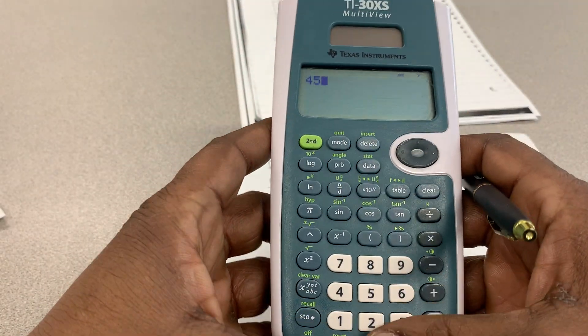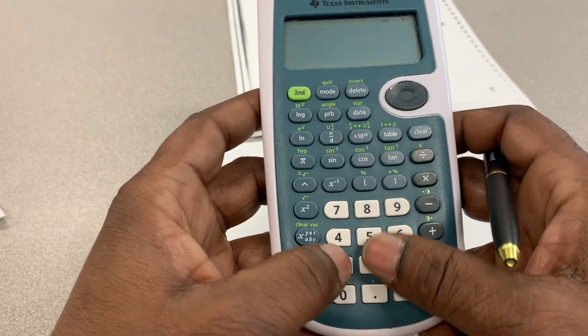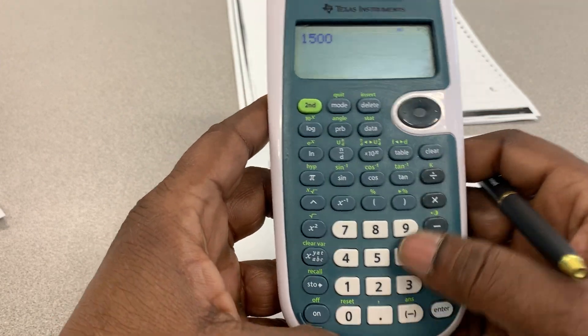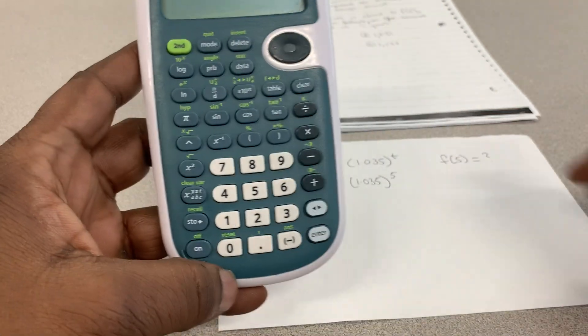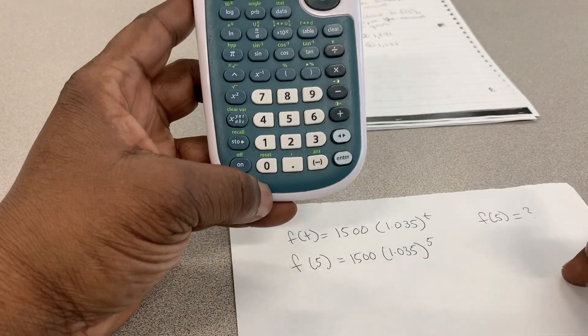I'm going to write $1,500. And I'm going to put the parentheses. I'm going to write it just like the way I got it on the paper.